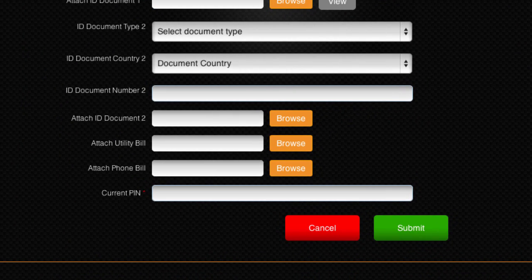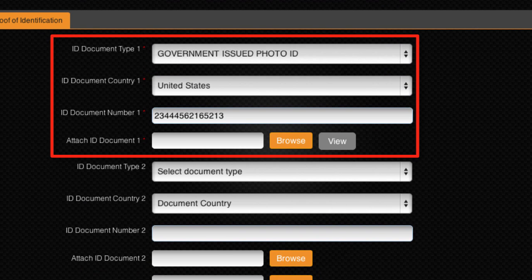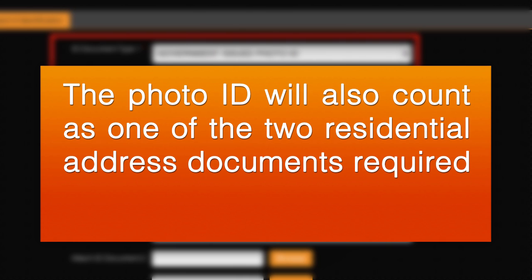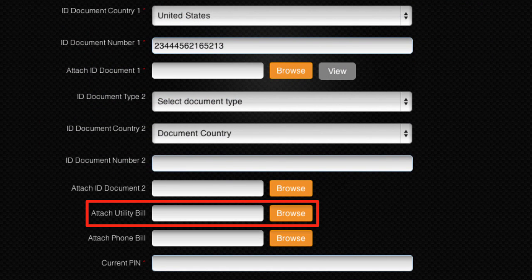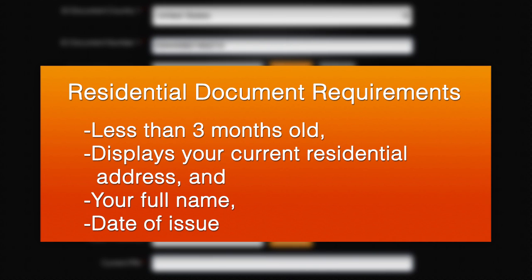Qualification for increased transaction limits requires two documents that display your current residential address and one photo ID document. Please be aware that if your photo ID displays your current residential address, the photo ID will also count as one of the two residential address documents required. If this is the case, you will only need to upload one more document that is less than three months old and displays your current residential address, your name and the date of issue.